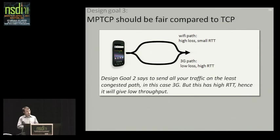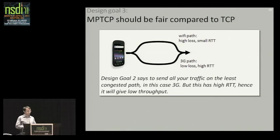Let's think through what design goal two said: send all your traffic on the least congested path. In this case, the least congested path is the 3G path. But the 3G path has a very large RTT, so TCP just is not able to take very much capacity on that path. By following design goal two and choosing the most efficient path, we've ended up hurting the user — and obviously if we hurt the user, no one will ever adopt our algorithm.